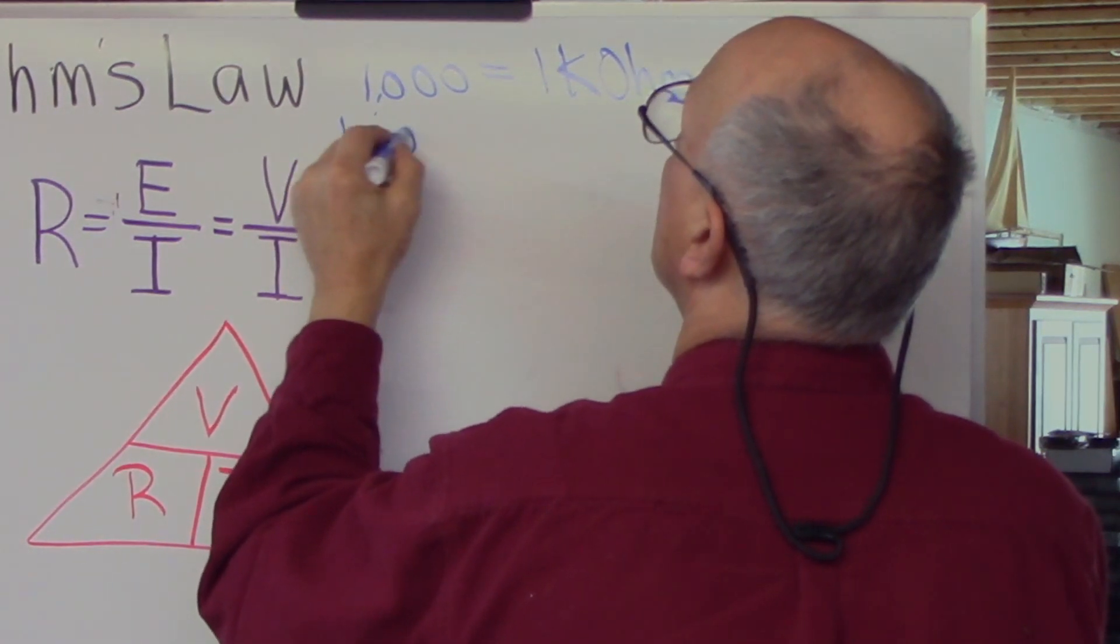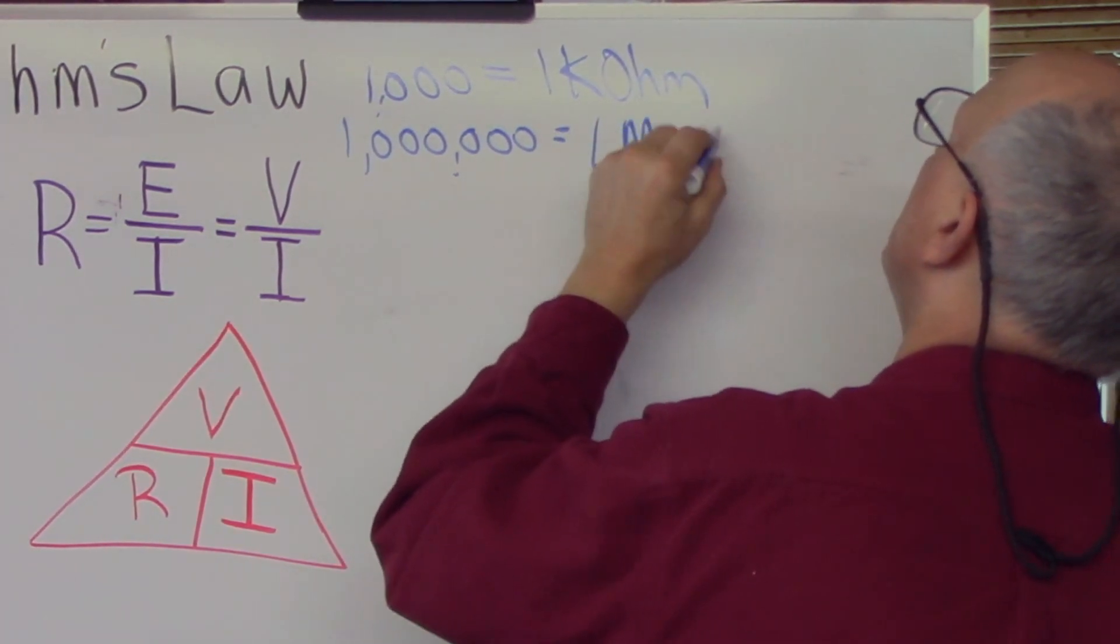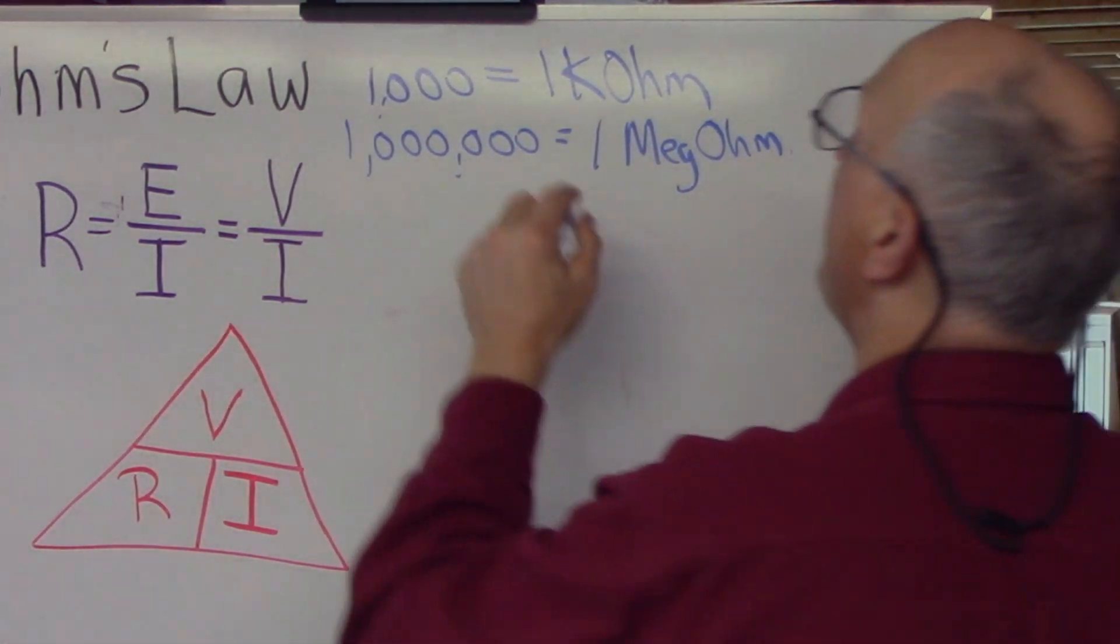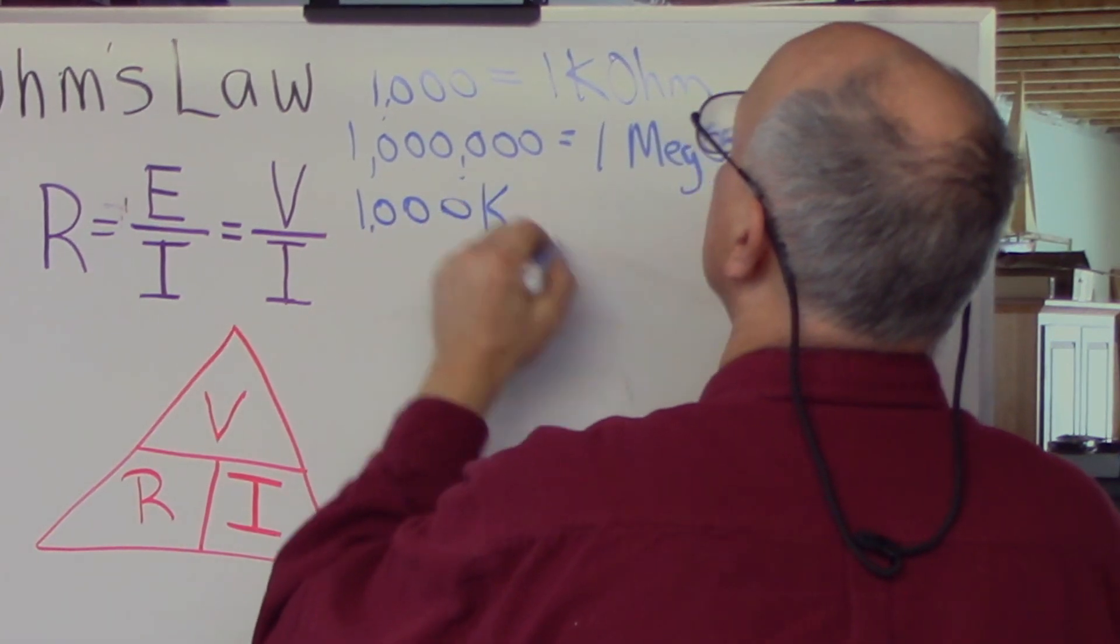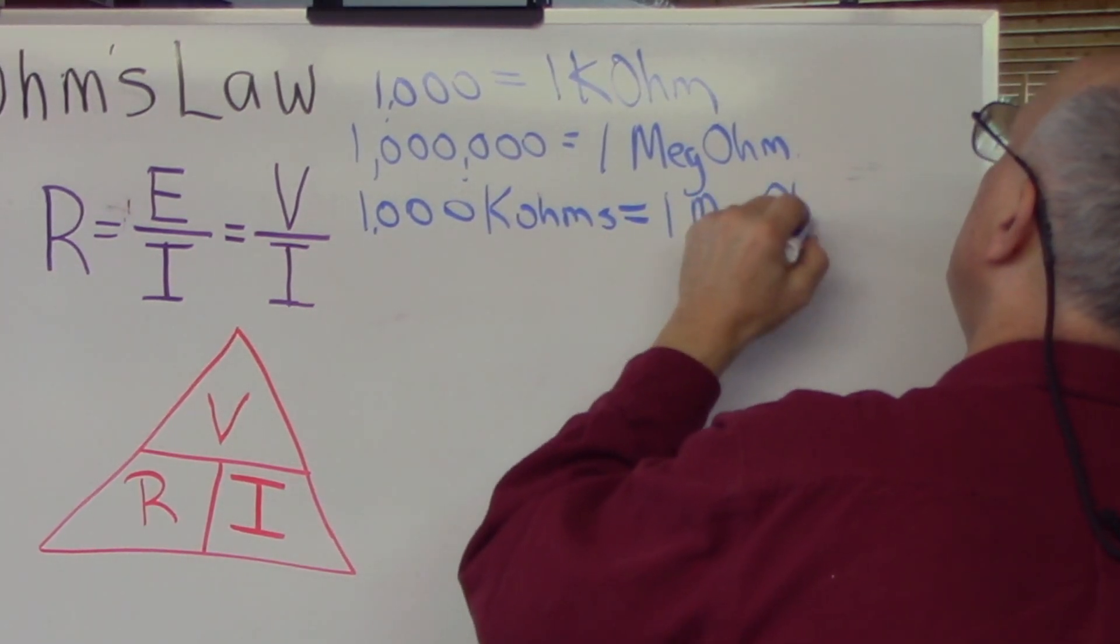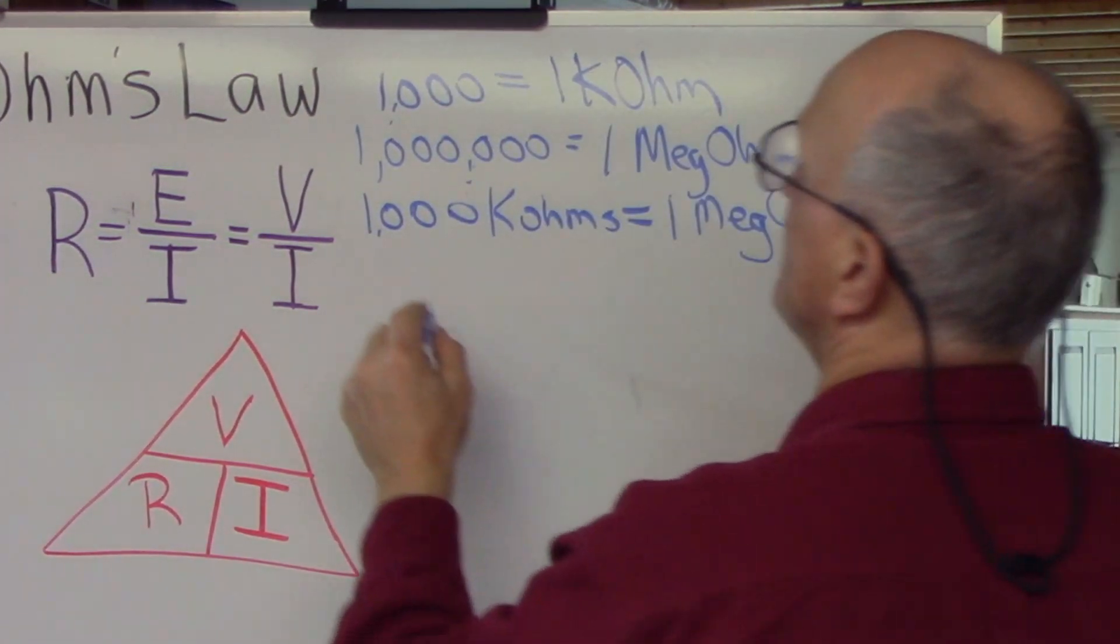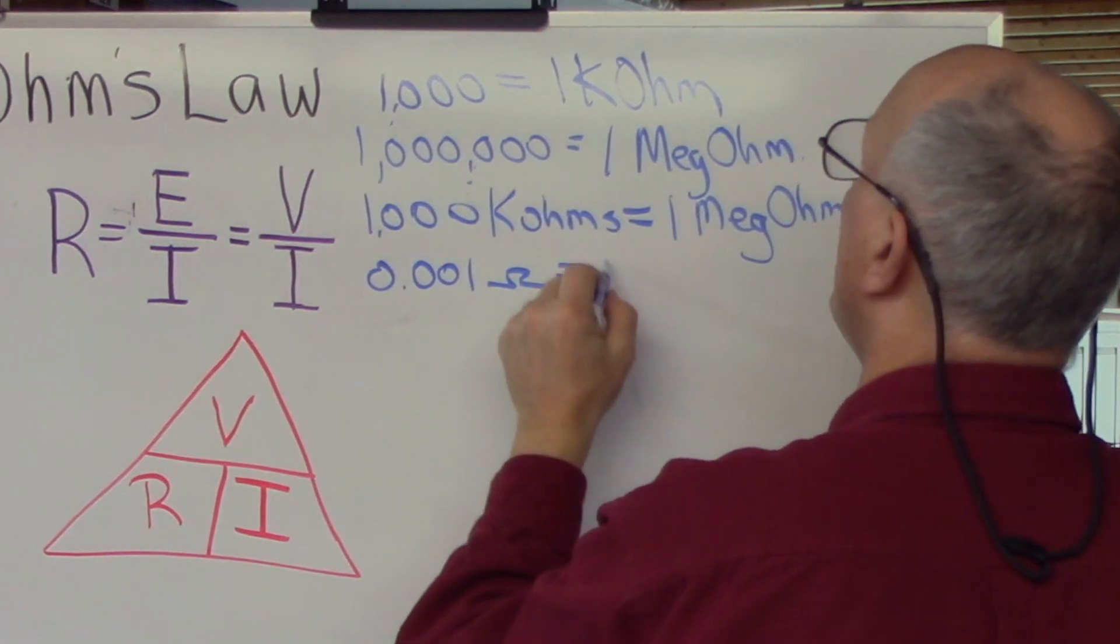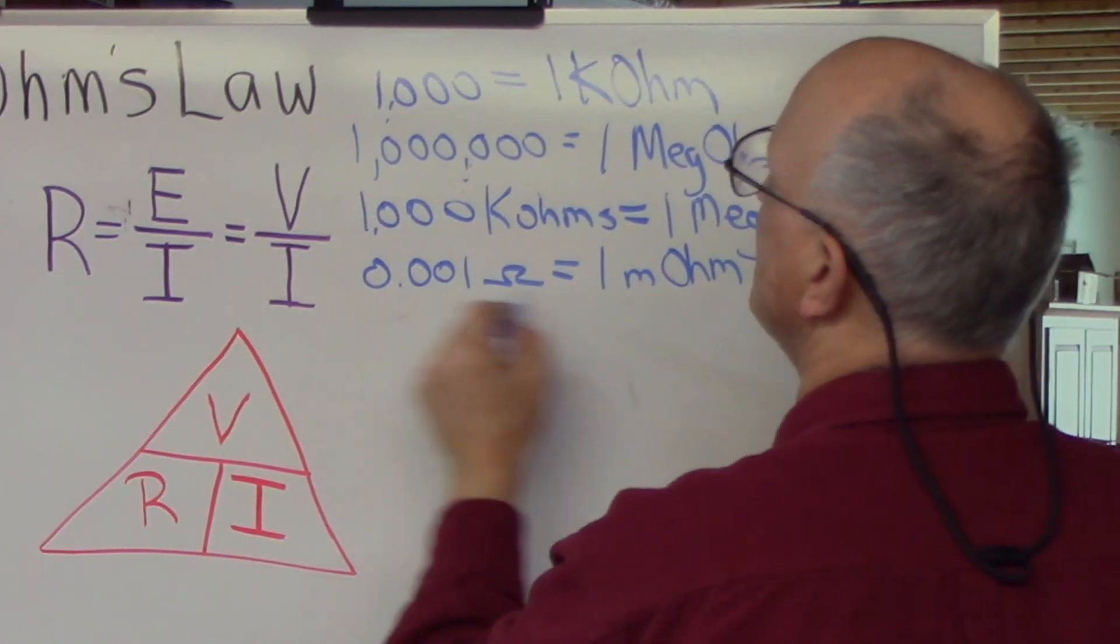1,000,000 ohms is equal to 1 mega ohm. Now, if you quickly do the math, you'll notice that 1,000 k ohms is equal to 1 mega ohm. You'll notice the relationship, 3 decimal places, and we can go in the other direction, too.